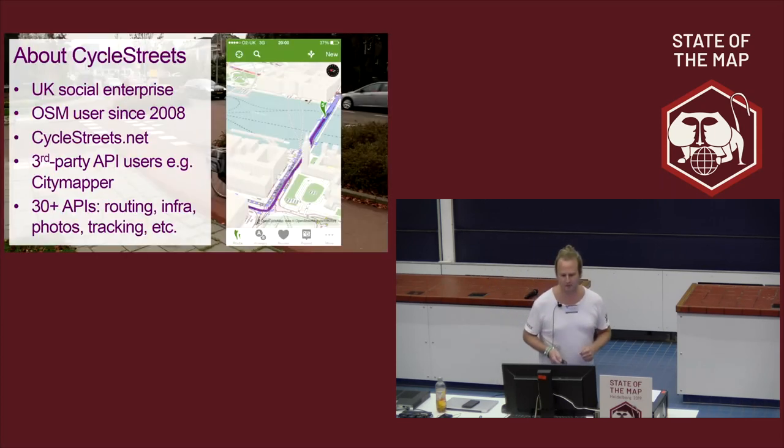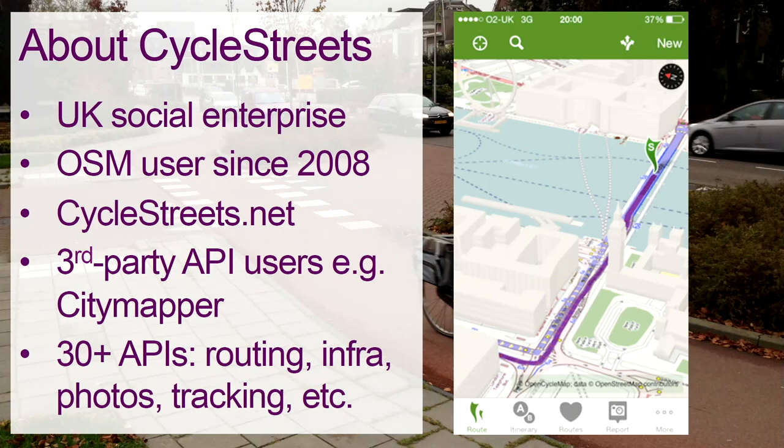Just briefly, by way of background: CycleStreets started in 2008. We have a rather old-looking website which will be improved shortly. But most of our routing — millions per month — comes through our data interface, our API. For example, if you're in London, you've probably heard of CityMapper, which uses routing from us. We have a whole range of routing APIs: routing from A to B, circular routing, user management, infrastructure auditing, photographs, GPS tracking, and so on.